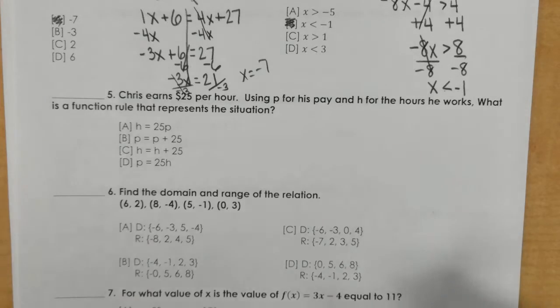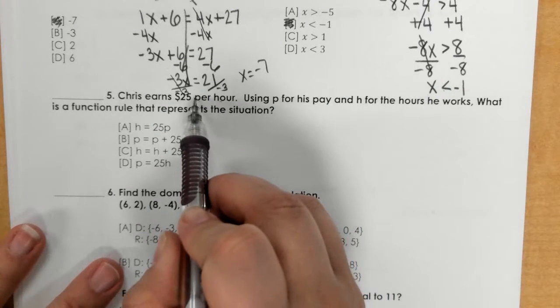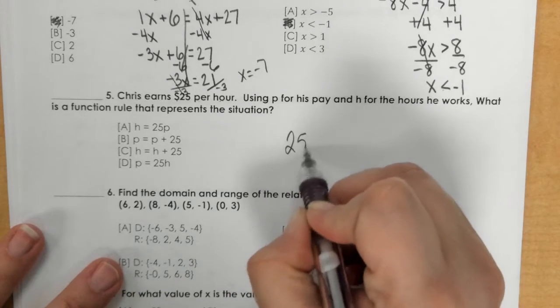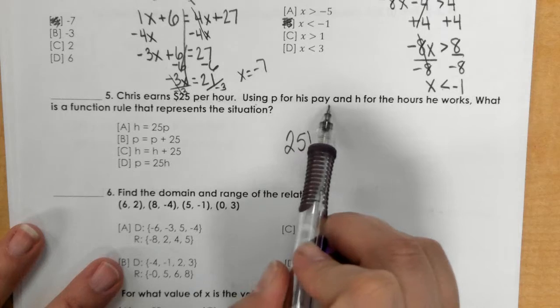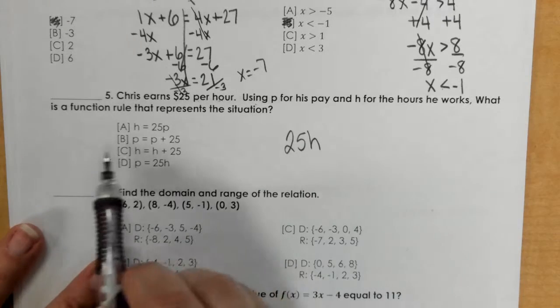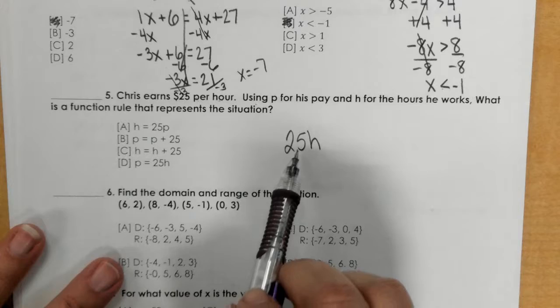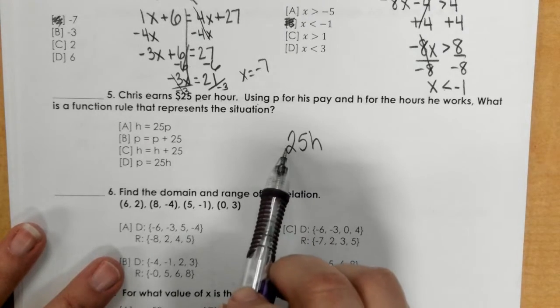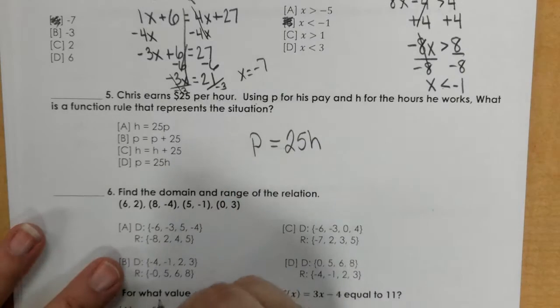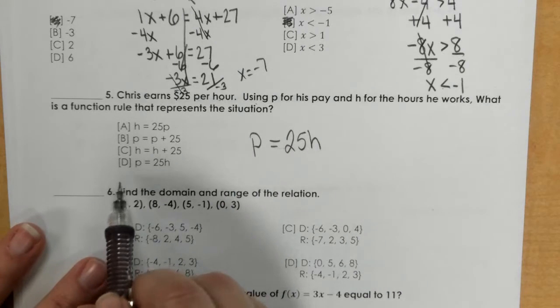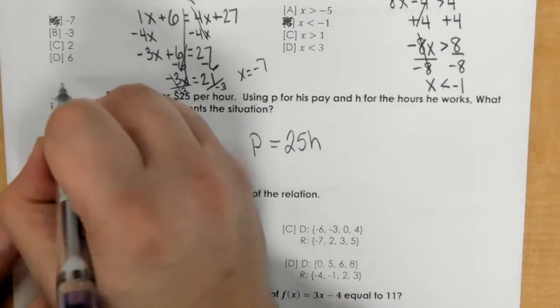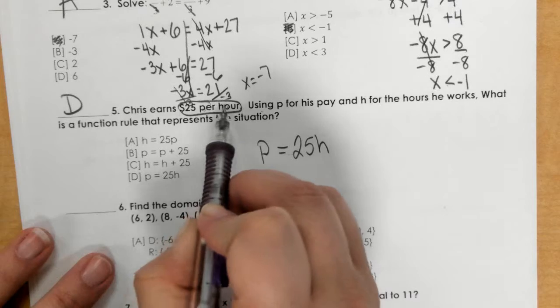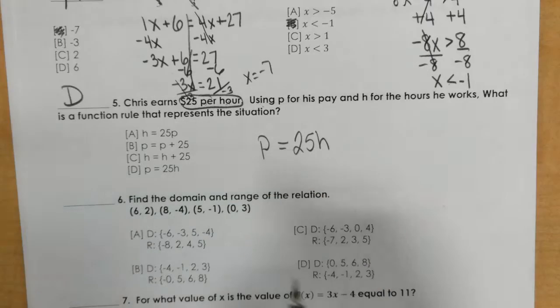In number 5 it says Chris earns $25 per hour. This per hour is like saying times h, so we have 25 times h. Using p for his pay and h for his hours he works, what is a function rule that represents the situation? If he works so many hours for $25 an hour, that's equaling your pay. So this has to be letter D. Remember that when you see this per hour, it's times h—per is like multiplying times h.